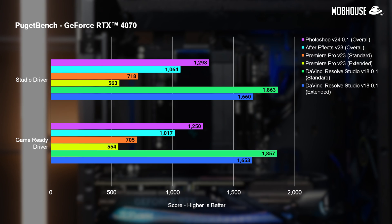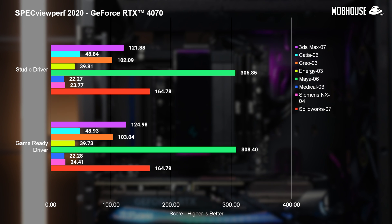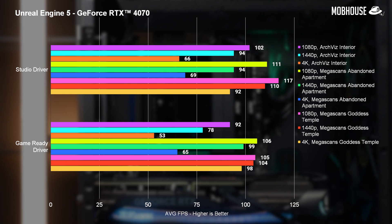Looking at PugetBench scores for content creation, it doesn't seem like there's any significant difference between the two drivers at all. Next, we tested SPEC ViewPerf 2020 to see if there's any difference in 3D graphics performance. Again, there is barely any difference across the 8 different applications that were tested. The same was observed in Unreal Engine 5's real-time performance, which is GPU-reliant — the average frame rates are similar for all 3 scenes that we tested, no matter the resolution.